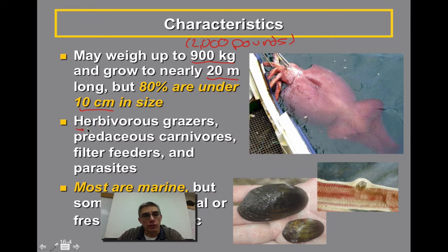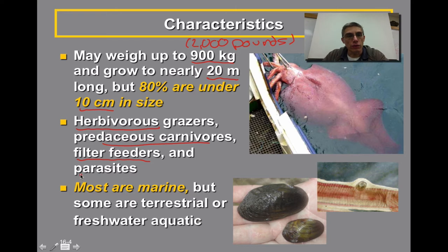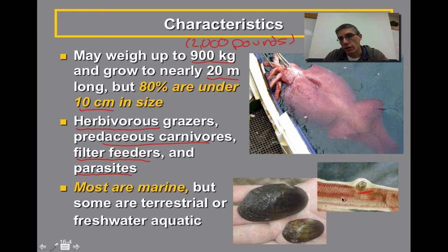A lot of these animals are going to be considered herbivorous, meaning they are plant eaters — considered grazers. There are a few that are considered predaceous carnivores that actually go out and eat other animals. A large number are considered filter feeders, like the freshwater clam you see here towards the bottom. And there are even a few that have larval stages that are considered parasites. This larval stage of the freshwater clam is actually embedded within the gills of a fish — for a period of time they parasitize the fish, then eventually drop off and grow into the adult stage.